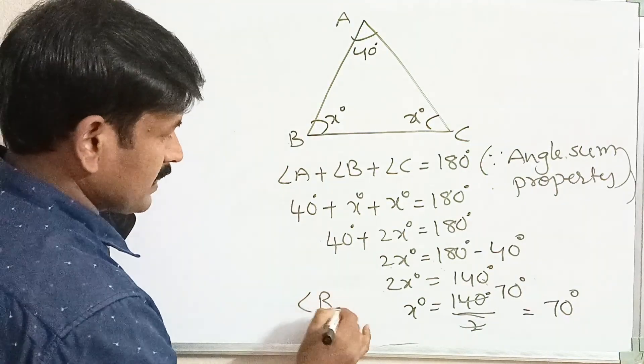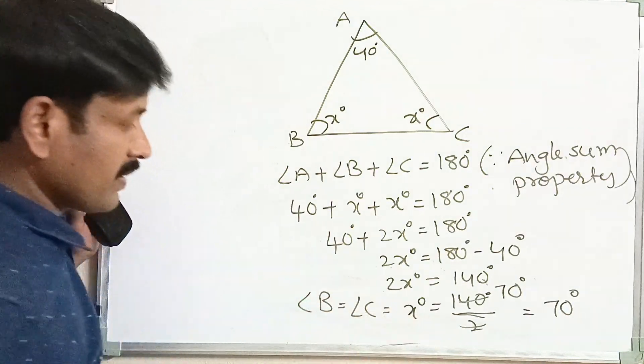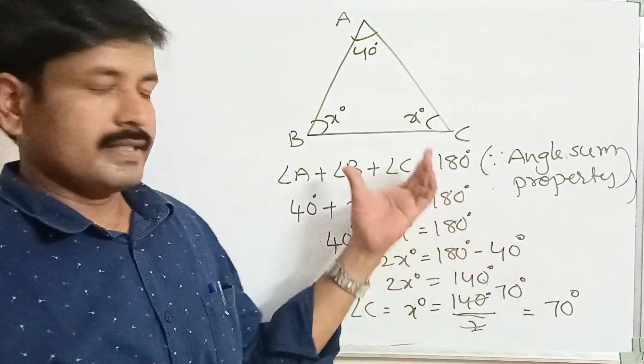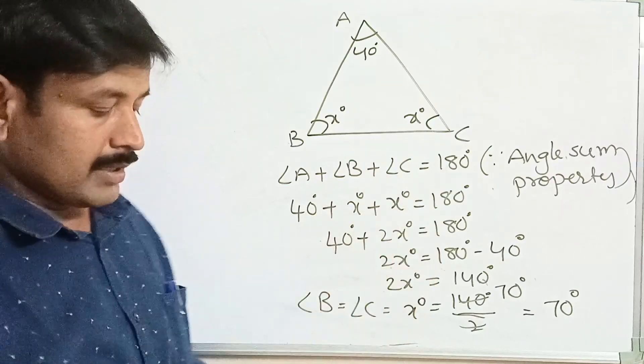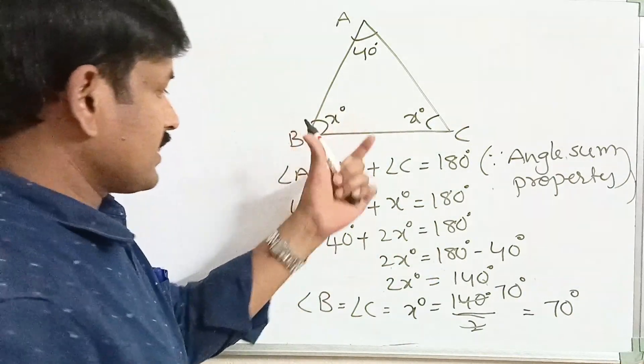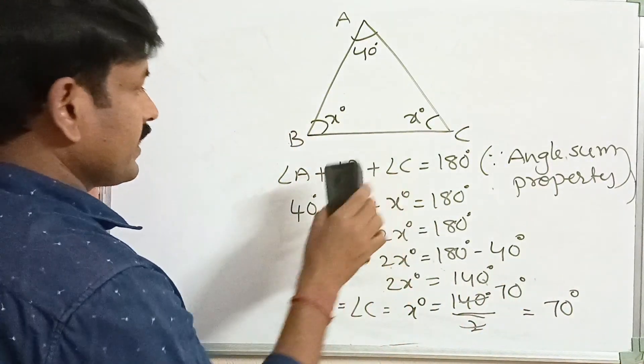Here, angle B equals angle C equals 70 degrees. The measure of the two equal angles — each angle measures 70 degrees.